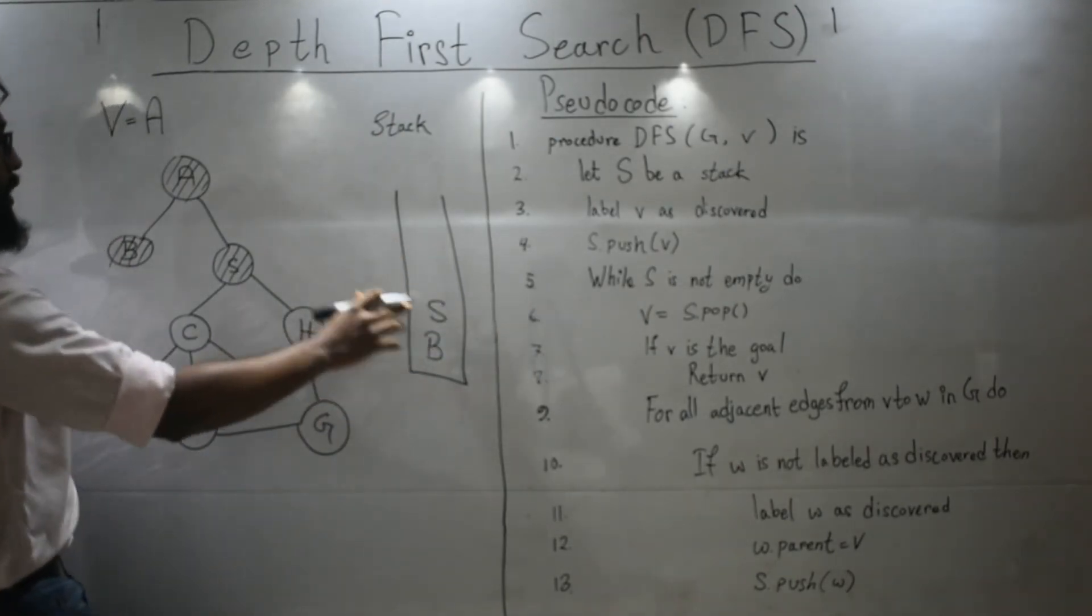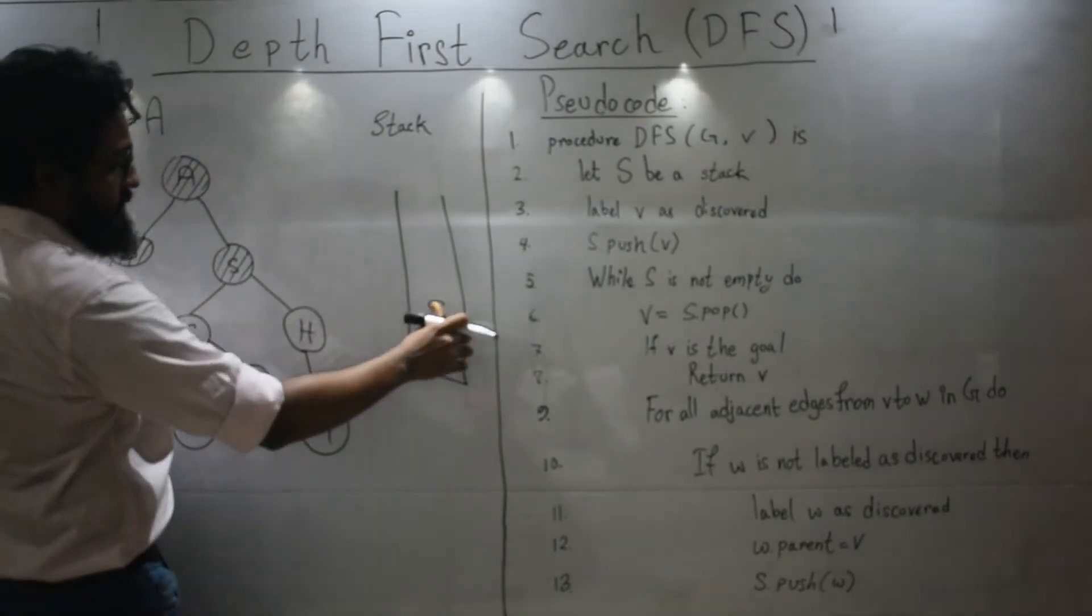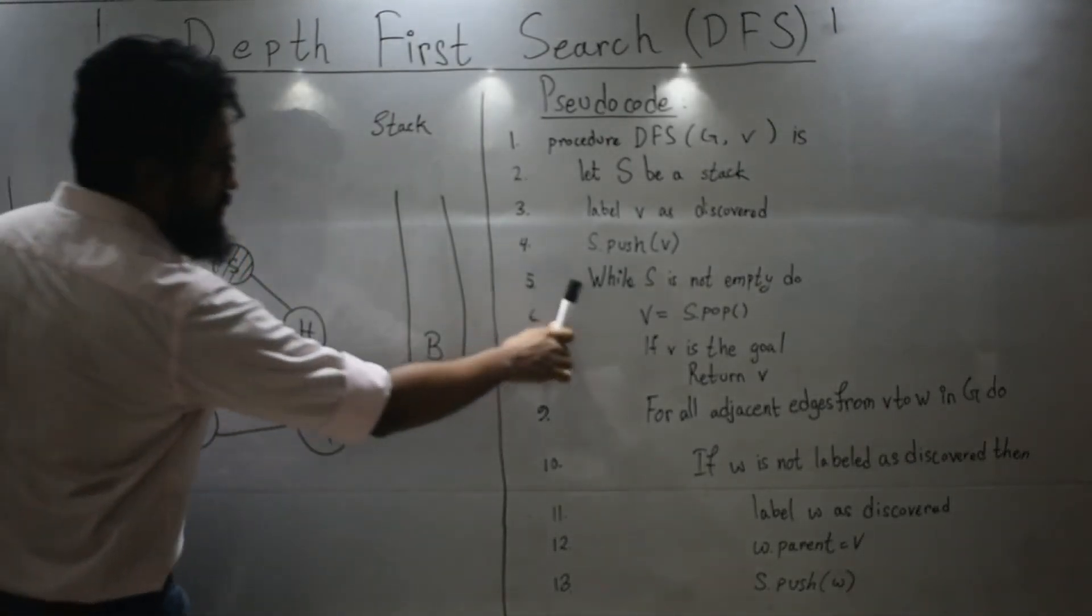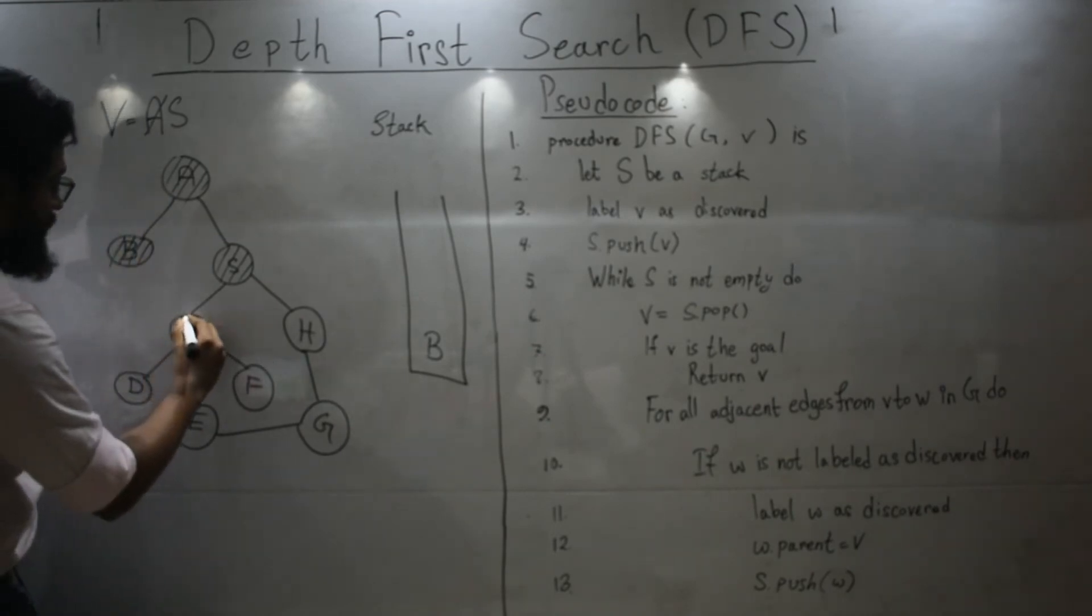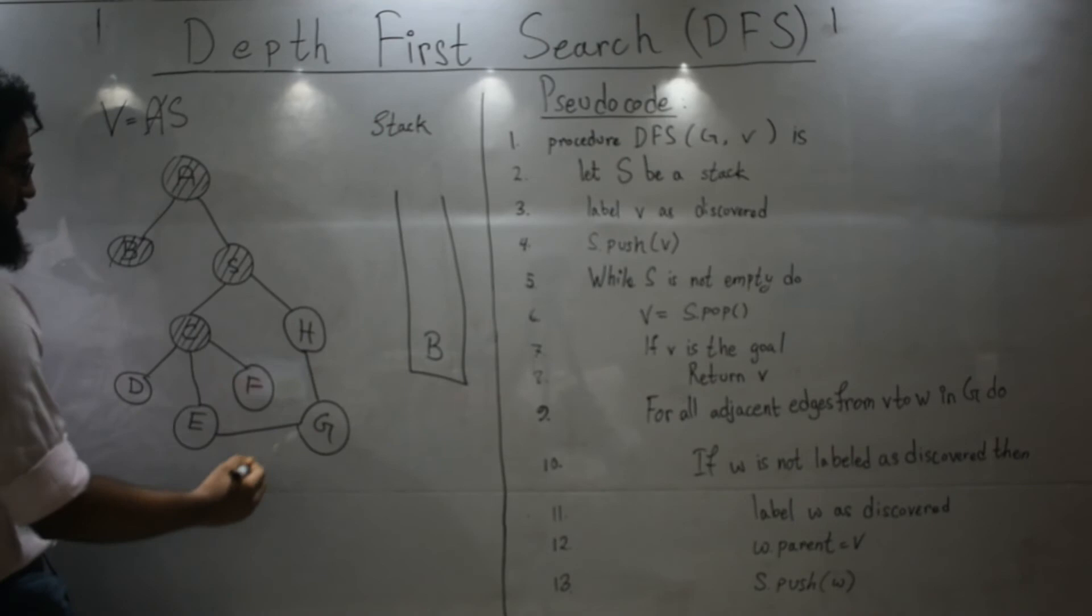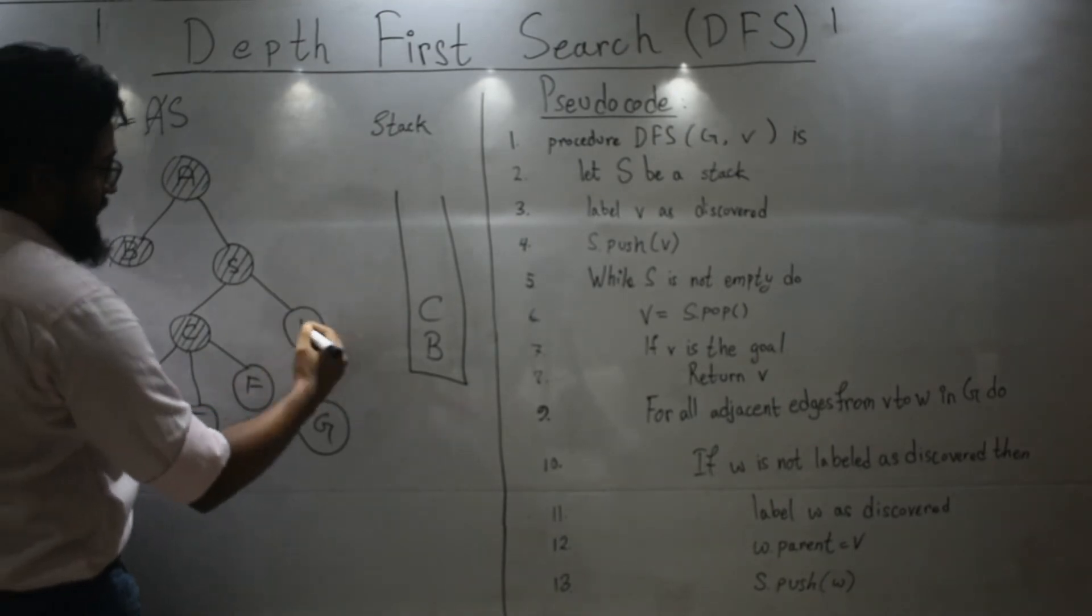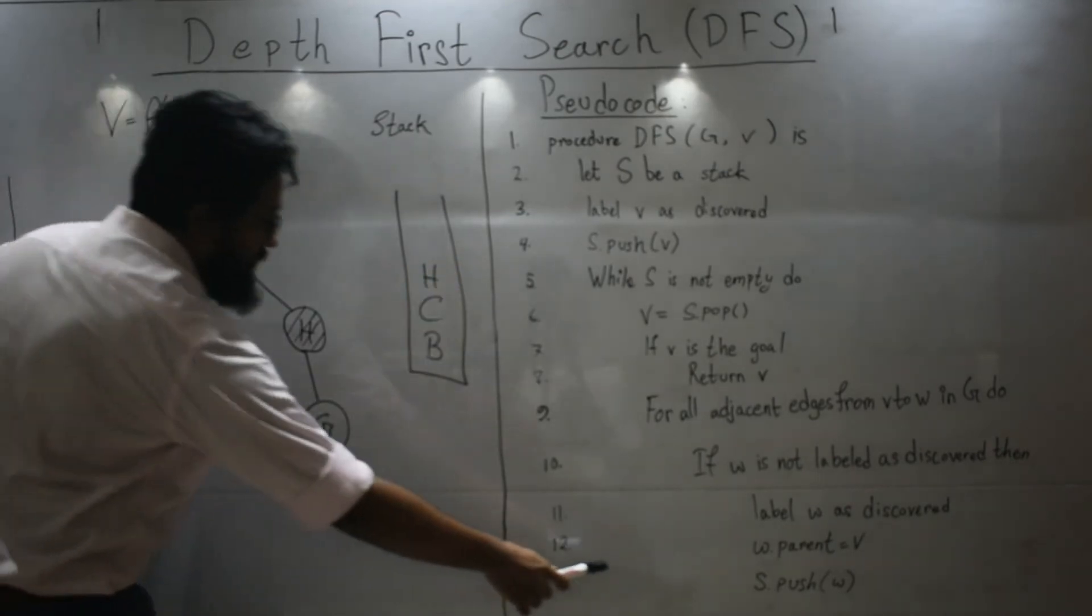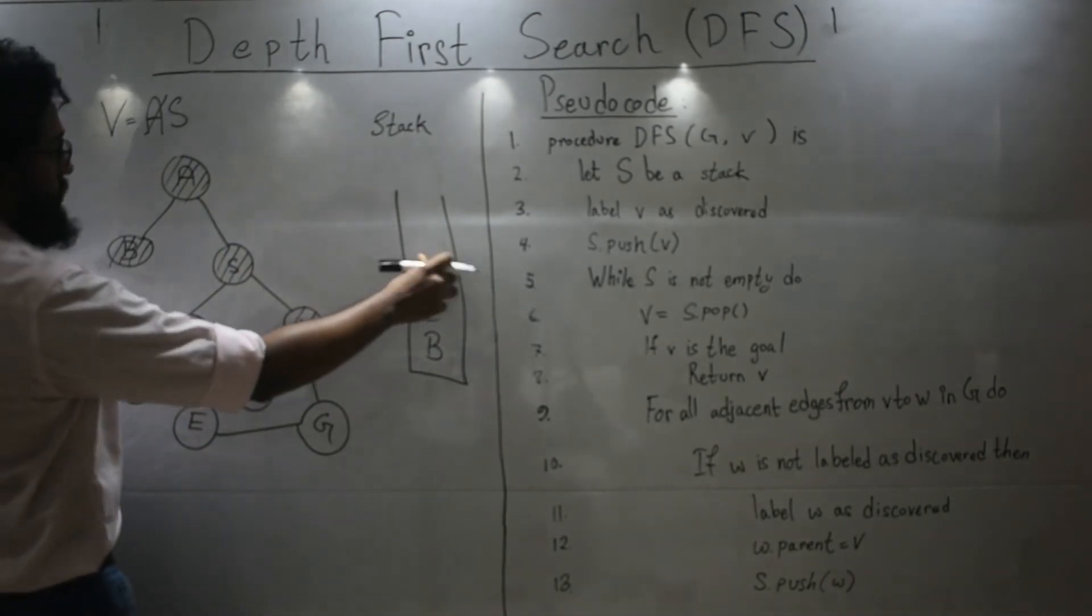What it will do it will pop whatever is on top of my stack and place it on V. So S is over here. Let's pop S and place it over here. Let's see what are the neighbors of S - C and H. If we put them in alphabetically, let's visit C. Mark it as visit. Push. And then again visit H and push. Then all the neighbors of S are done. Go to line number six. Pop. So let's pop.